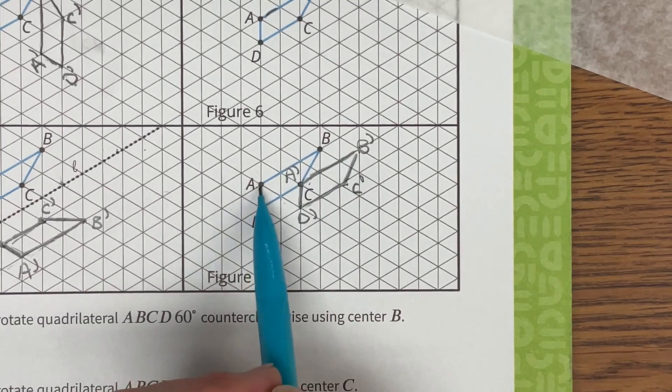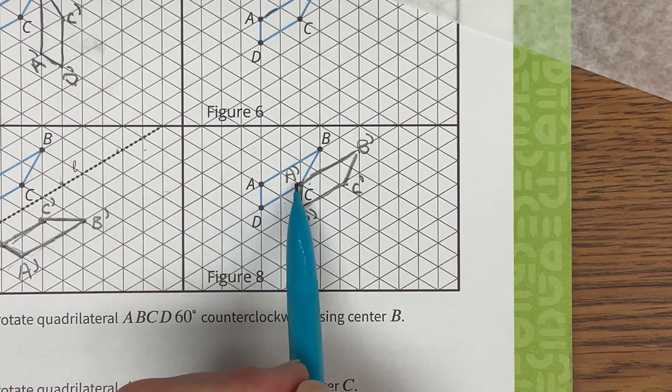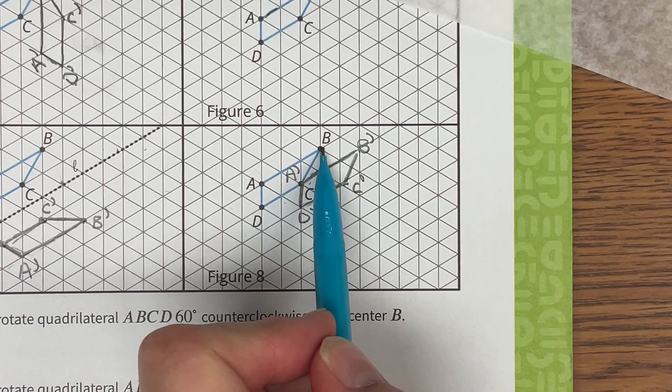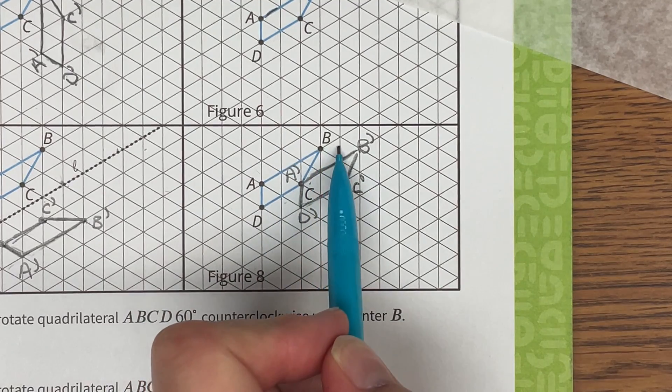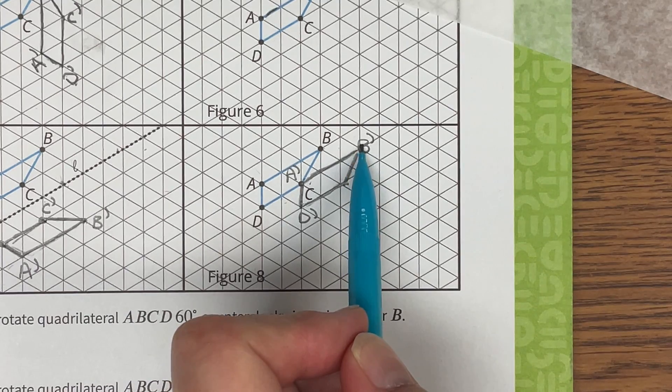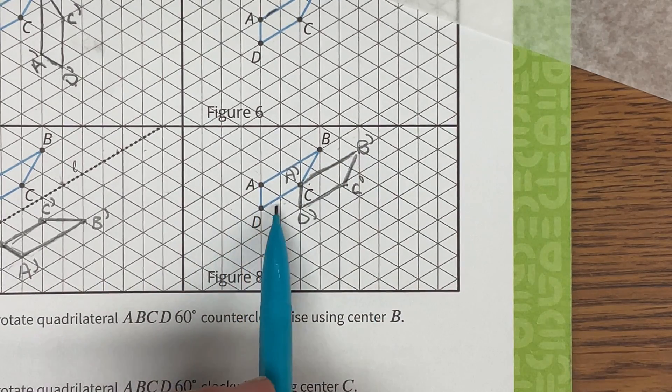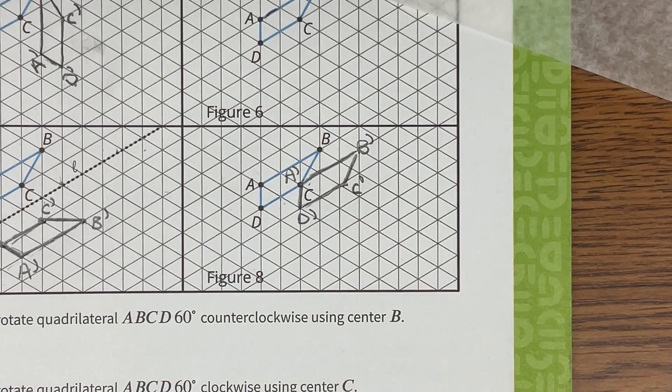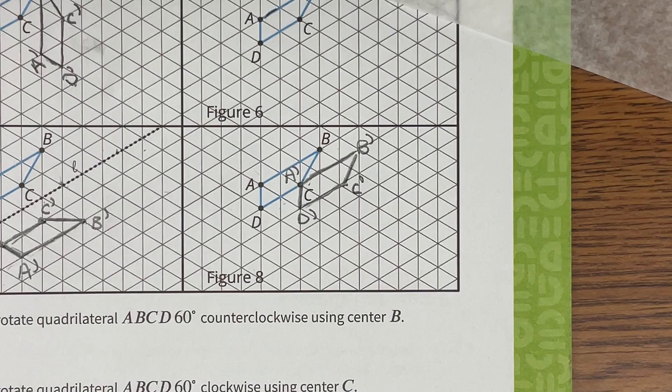And so I could see that A was two triangles away from C and so now B if I didn't have that patty paper I would just count one two triangles put my point B prime. For D I would count over two triangles and put my D prime. Either way is absolutely fine.